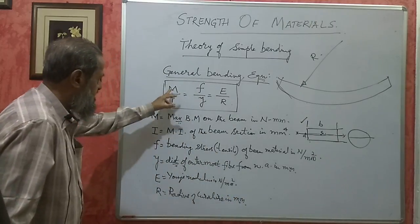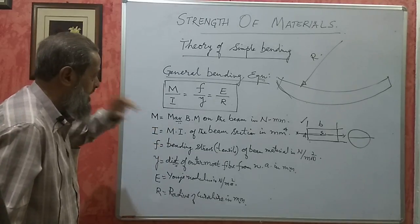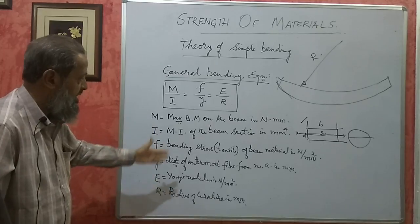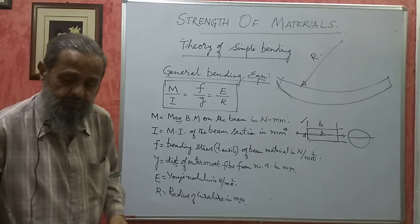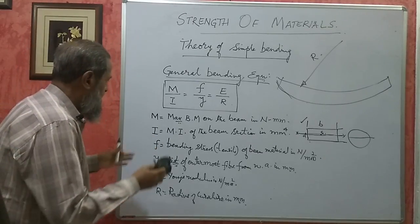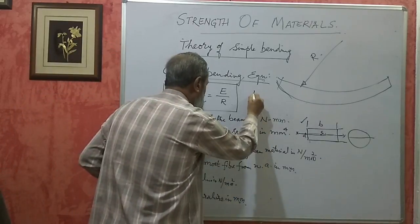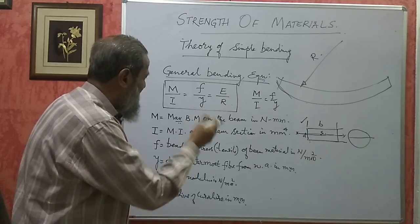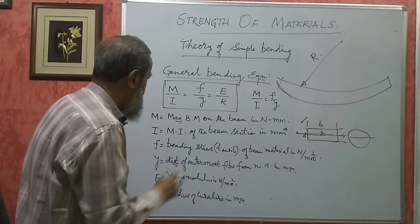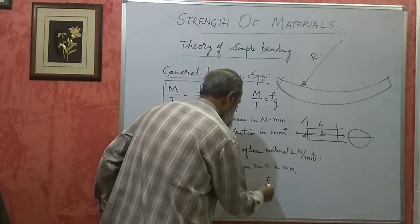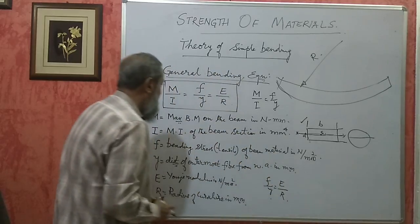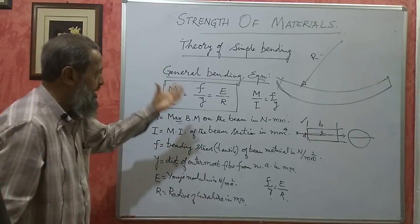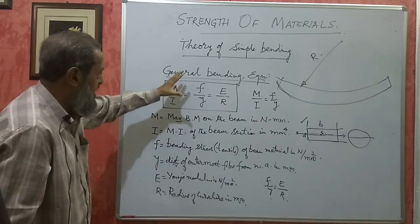These are the units and what each variable stands for. Sometimes they will ask you in theory to write the general bending equation and give the nomenclature — what is M, what is I, what are their units. In this equation, we can use either M/I = F/Y, or F/Y = E/R, depending upon what is given and what is asked. We can use these two combinations depending upon the given data and what is to be calculated.